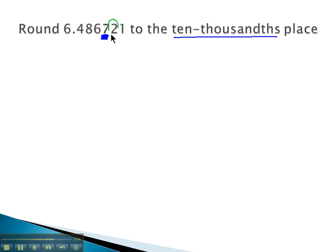Which means we look at the next digit to decide which direction to go. It's a two, so we need to round down, which means we're just going to drop off everything at the end and make them into zeros.